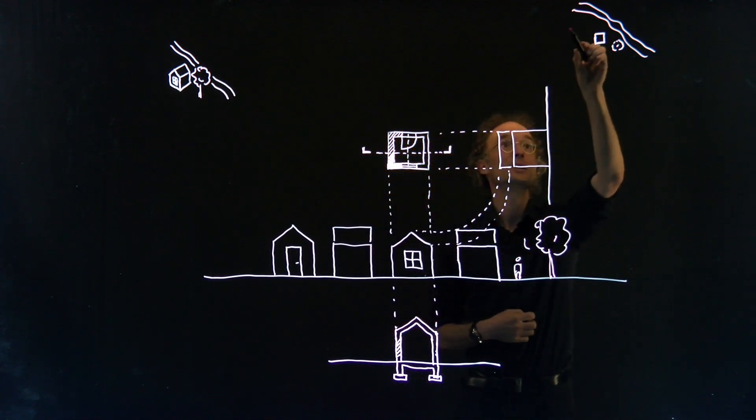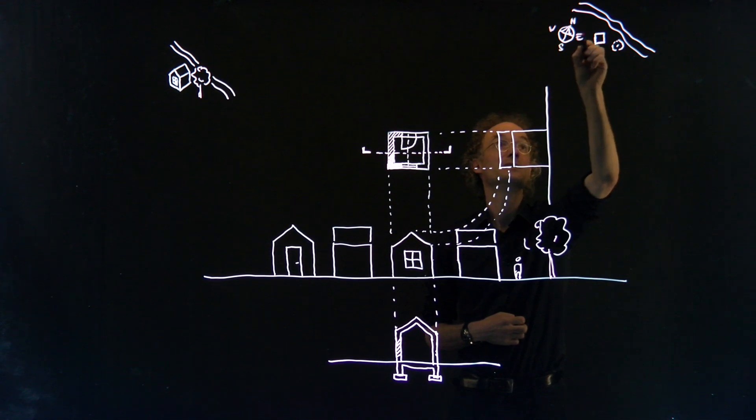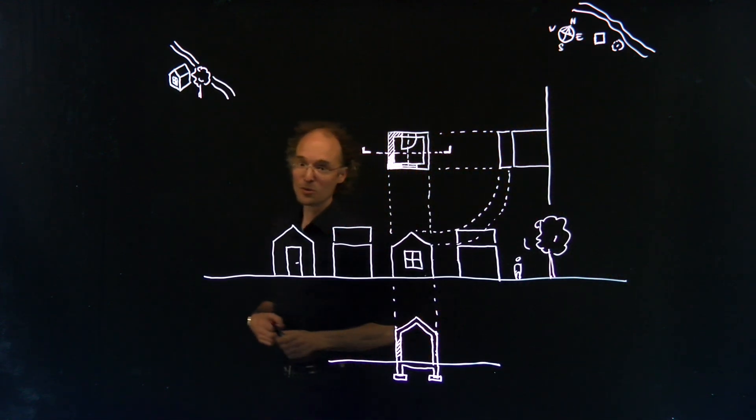So I have to include a north point, an arrow which indicates where the north is. Could be a kind of compass like this, so that you have north, south, the west and the east. We're almost there.